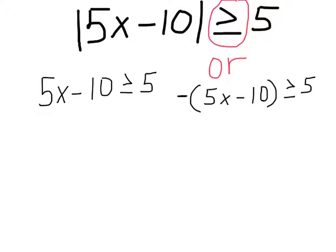Or for the second inequality, we are going to remove the absolute value symbols and replace it with parentheses and a negative sign in front. So we have a negative sign, parentheses, 5X minus 10, close parentheses, is greater than or equal to five. These are the two inequalities we are going to solve for now.